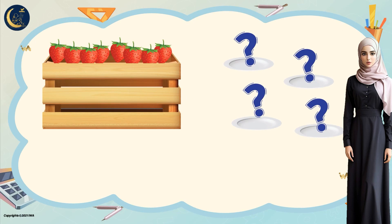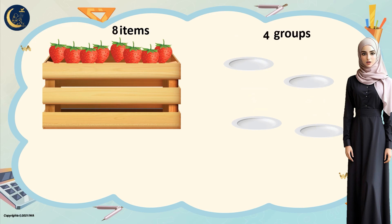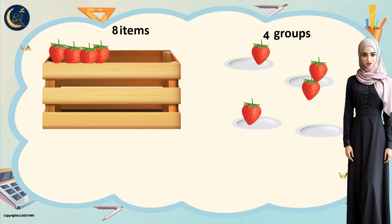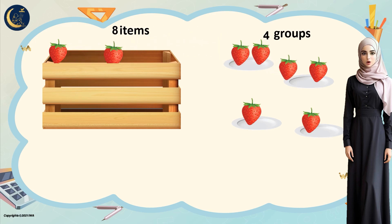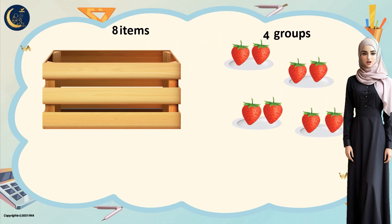We have eight strawberries and we want to divide them equally into four plates. How many strawberries do we put in each plate? The strawberries represent the items and the plates represent the groups. Let's put one strawberry in each plate — one here, here, here, and here. We have four left, let's distribute them — one more in each plate.